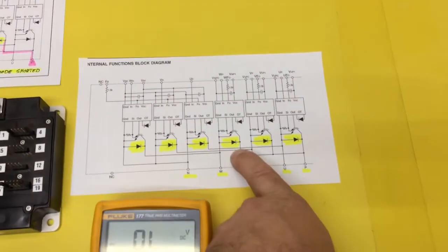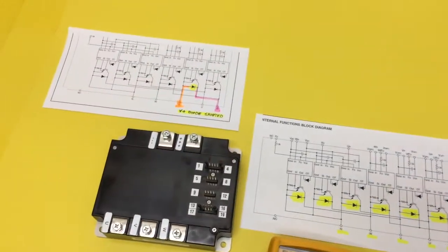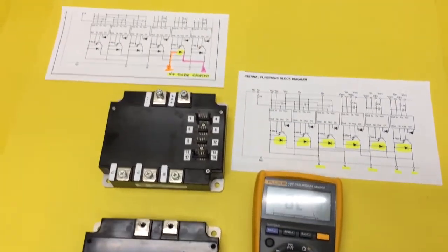This is just the freewheel diodes. We will do another test where we learn how to check that gate junction, and we'll do another video where we explain how they work.